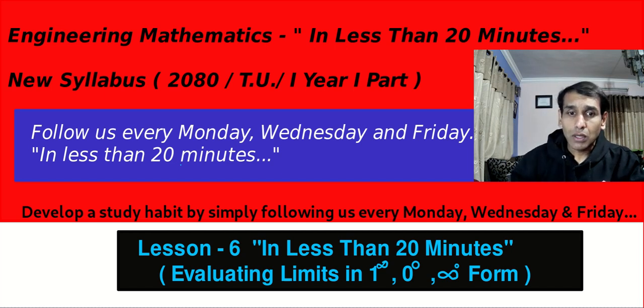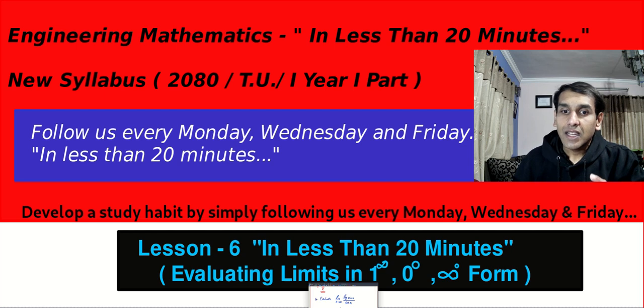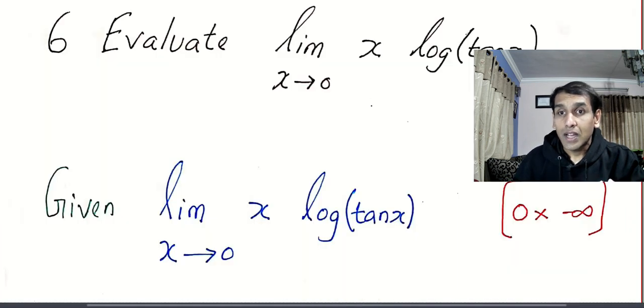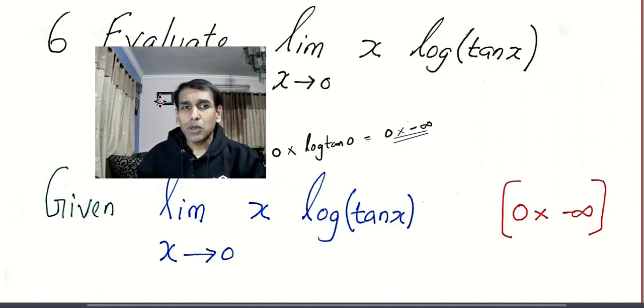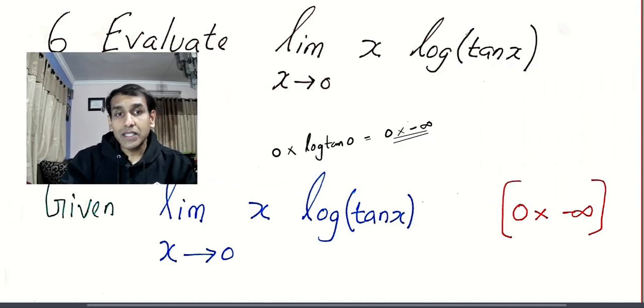I gave you one question as homework in the last class and I hope you got the answer. The question is like x multiplied by log tan x. Now I am going to tell you one shortcut method to evaluate it. I think some of you did a long process. What is the first thing to do? I hope you still remember the first thing is direct substitution. Do you still remember?